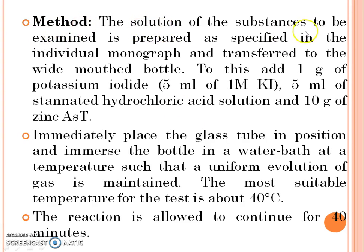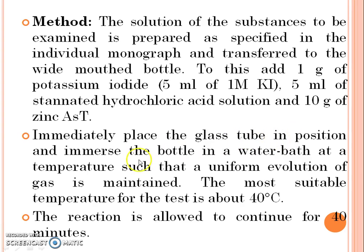Method: The solution of the substance to be examined is prepared as specified in the individual monograph and transferred to the wide-mouth bottle. To this, add 1 g of potassium iodide, 5 ml of stannated hydrochloric acid solution, and 10 g of zinc. Immediately place the glass tube in position and immerse the bottle in a water bath at a temperature such that a uniform evolution of gas is maintained. The most suitable temperature for this test is 40 degrees Celsius.